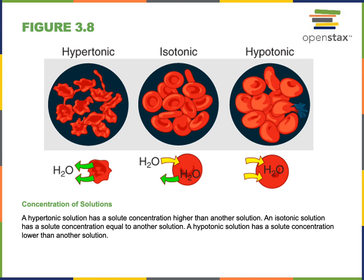A hypotonic solution contains fewer solutes than the cell. If we place a cell into a hypotonic solution, the volume would increase as water moves into the cytosol by osmosis. The cell would swell, and if too much water enters the cell, it could cause the cell to rupture or lyse — also known as hypotonic lysis — when a cell bursts as a result of being placed in a solution with too low a solute concentration.